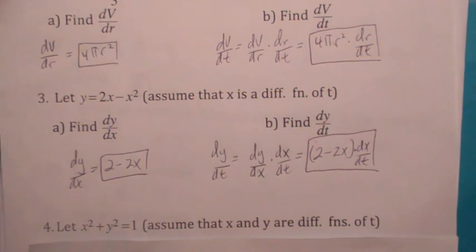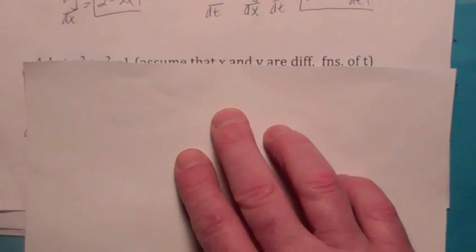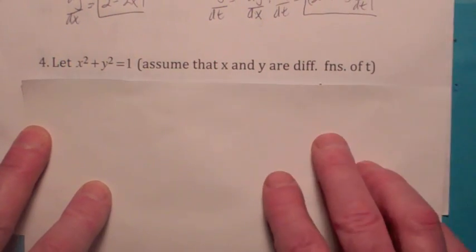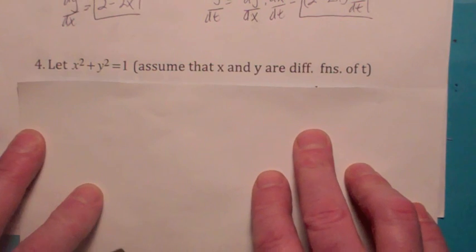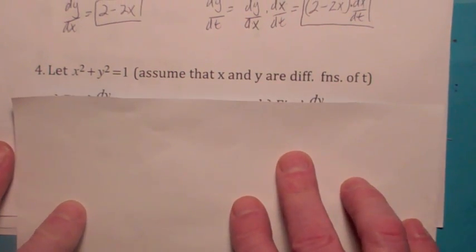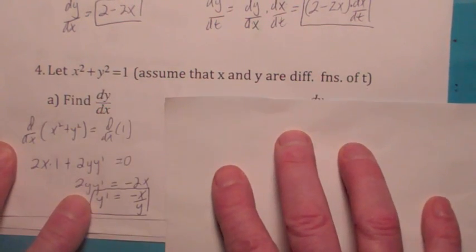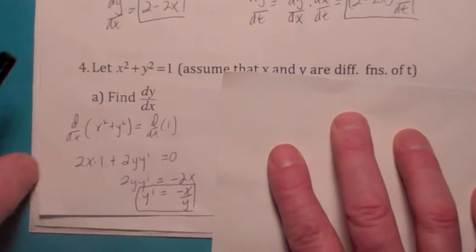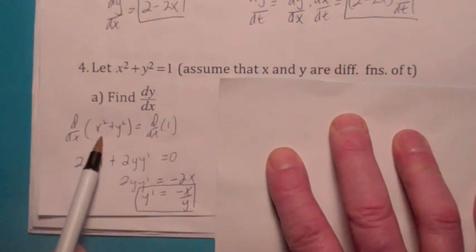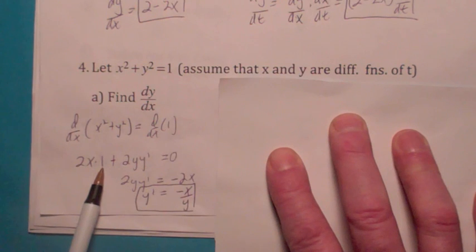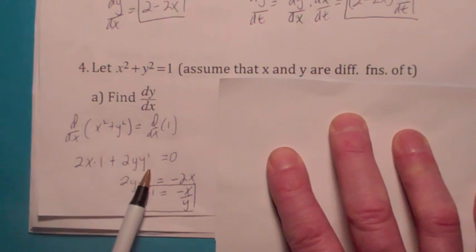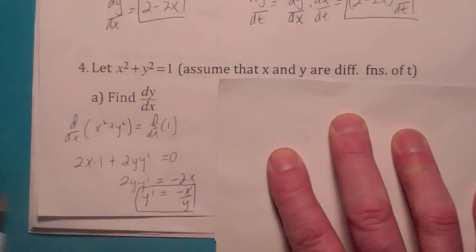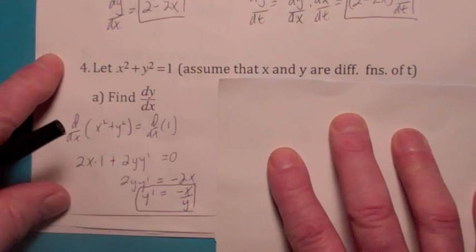Now this last one I think is the most important one for what we're going to talk about in this section. Here we're assuming x and y are both differentiable functions of t. For the first one, when you differentiate with respect to x, you get 2x times 1 plus 2y dy/dx, which is y prime, equals 0. So when you solve for y prime, you get negative x over y.